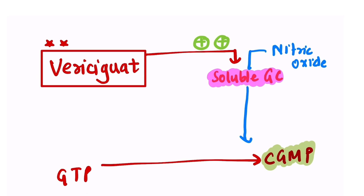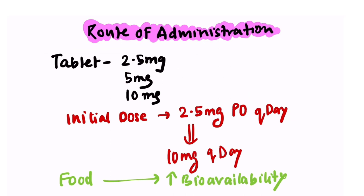Now let us understand the route of administration. Basically, Vericiguat comes in tablet form. It has three types of doses: 2.5 mg, 5 mg, and 10 mg. The initial dose is 2.5 mg per day, and it can be increased to 10 mg per day if well tolerated. It is advised to give the drug with food as food increases bioavailability.